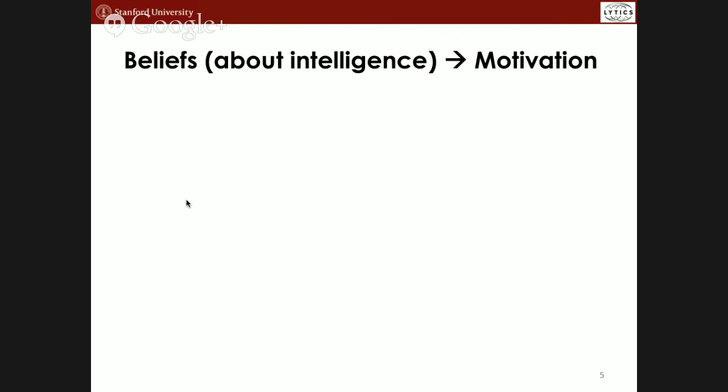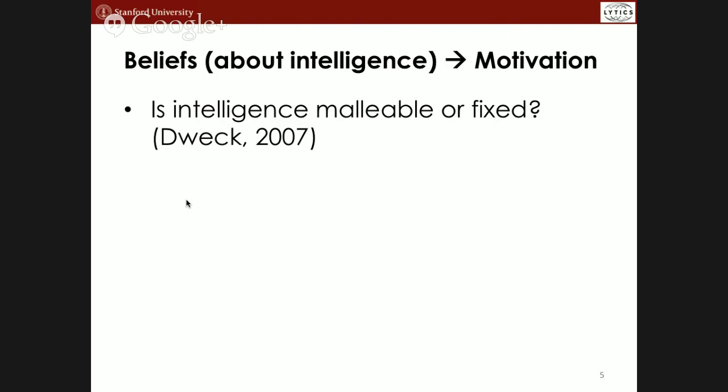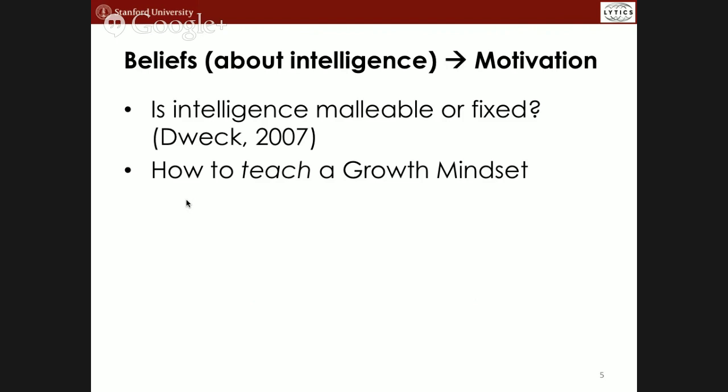The motivation was to think about what psychological interventions have been really powerful. Carol Dweck has done work on how whether people believe intelligence is malleable or fixed has a huge effect on outcomes — whether they give up easily, whether they persist. If you think intelligence is malleable, you're willing to put in effort and believe that looking for the right strategies helps you learn. If you think it's fixed, every mistake is a referendum on your ability. There are several published interventions where teaching students that intelligence can be changed actually increases outcomes like grades.